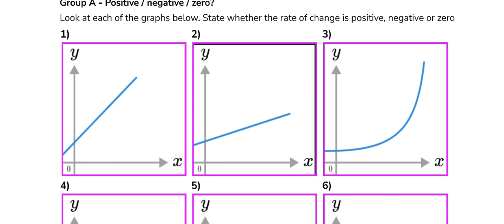So if a line goes up, we have a positive rate of change. It means time progressing makes something increase. So we've got positive, positive.